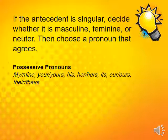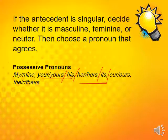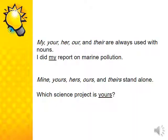If the antecedent is singular, decide whether it is masculine, feminine, or neuter, then choose a pronoun that agrees. The possessive pronouns are: my/mine, your/yours, his/his, her/hers, its/its, our/ours, their/theirs. My, your, her, our, and their are always used with nouns.